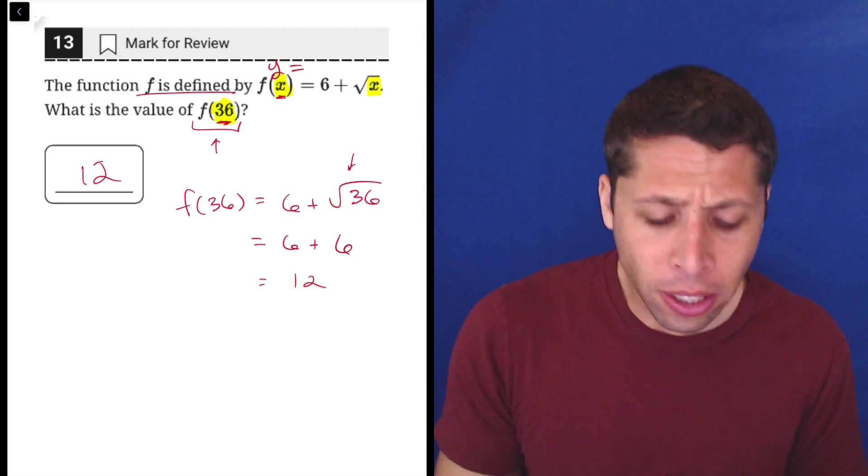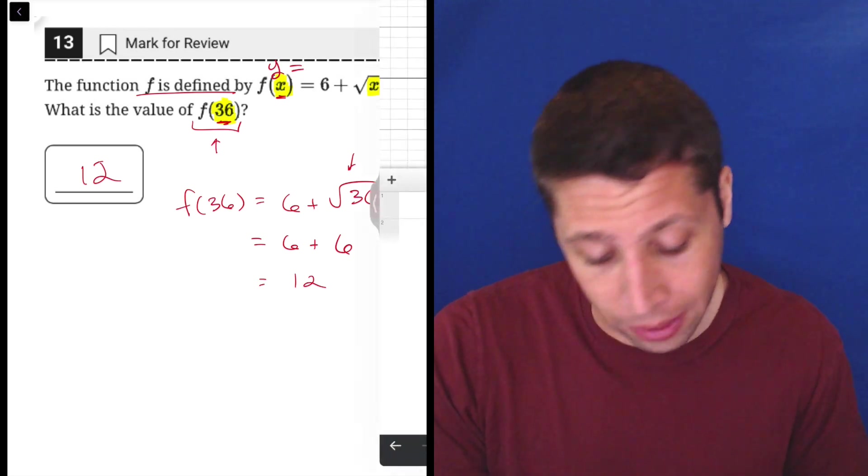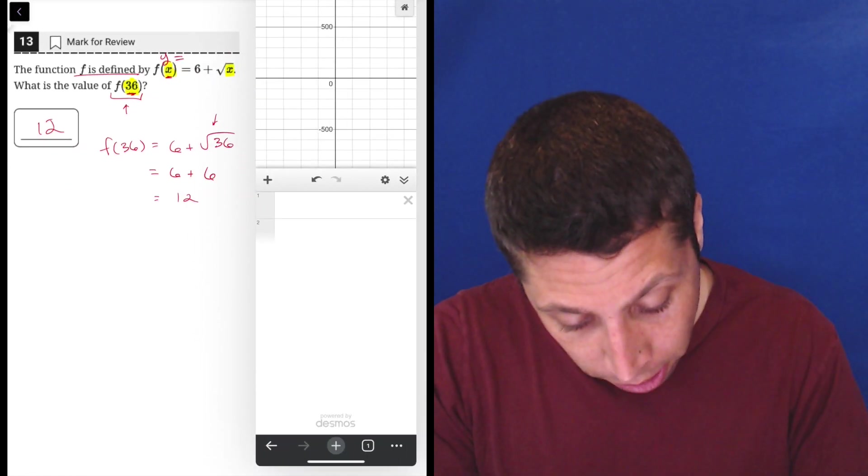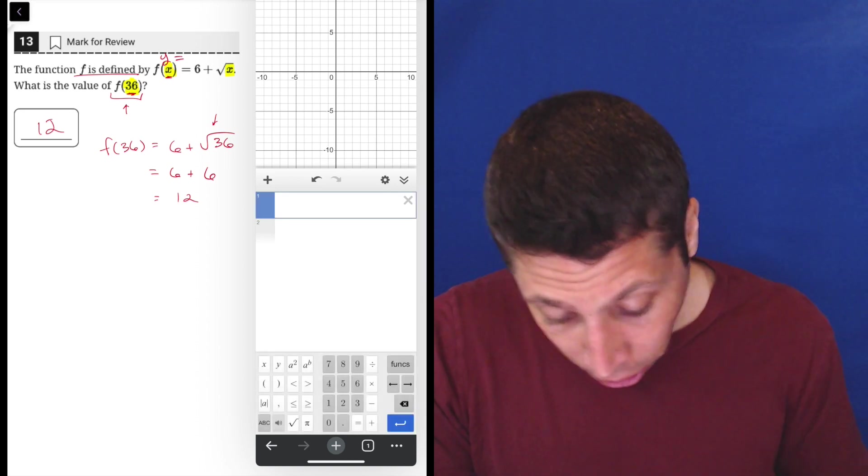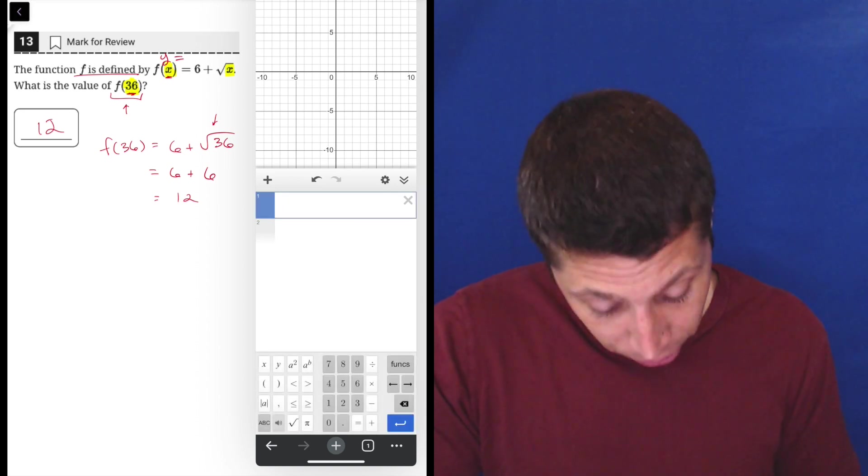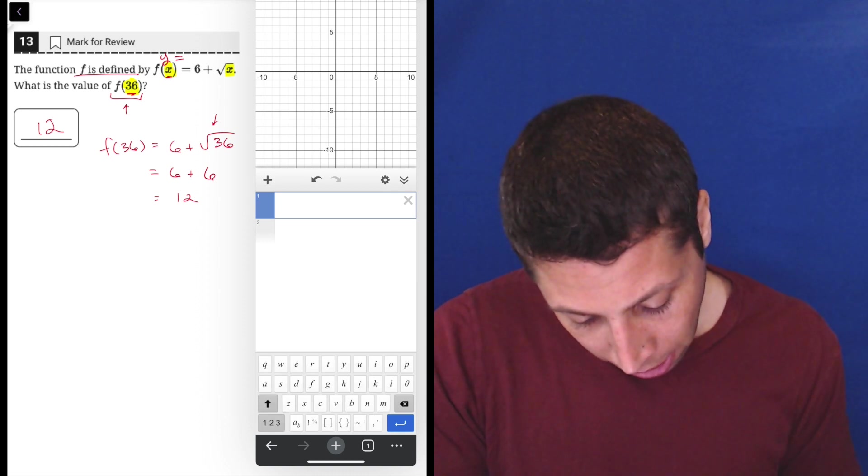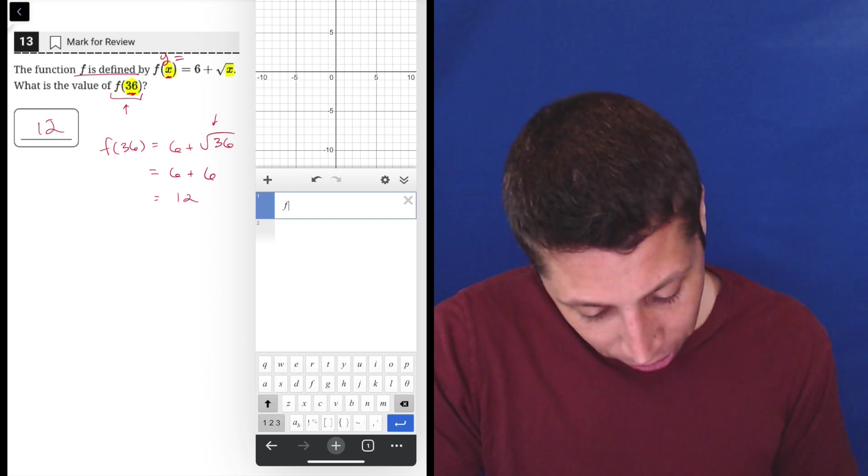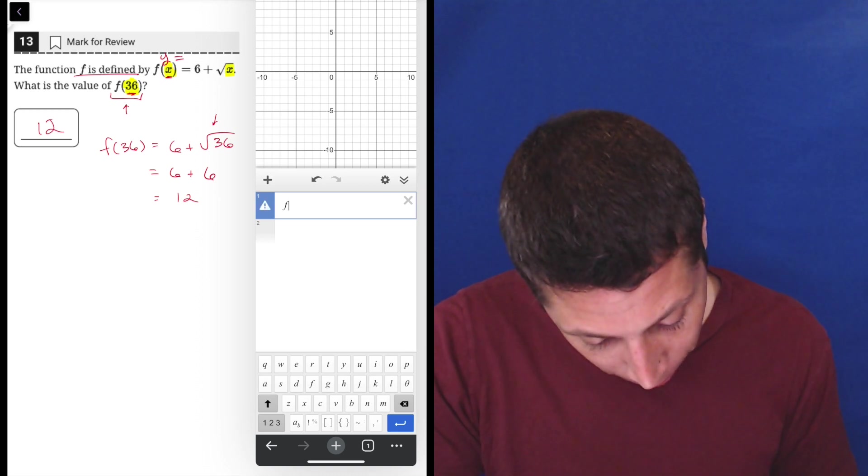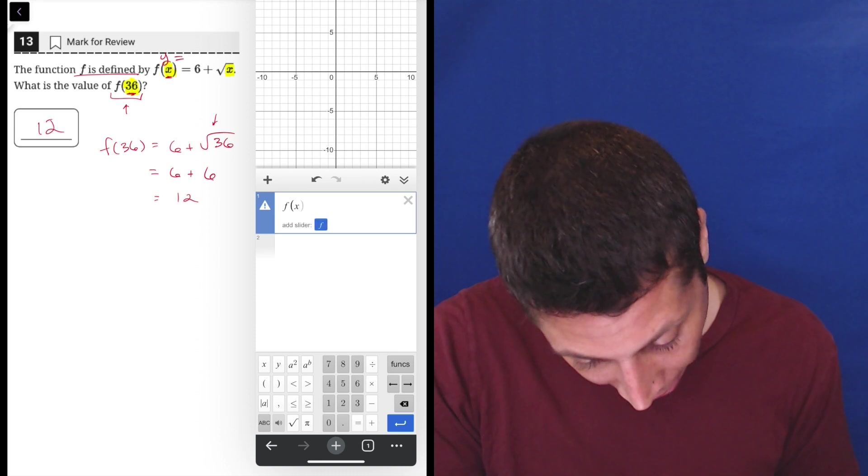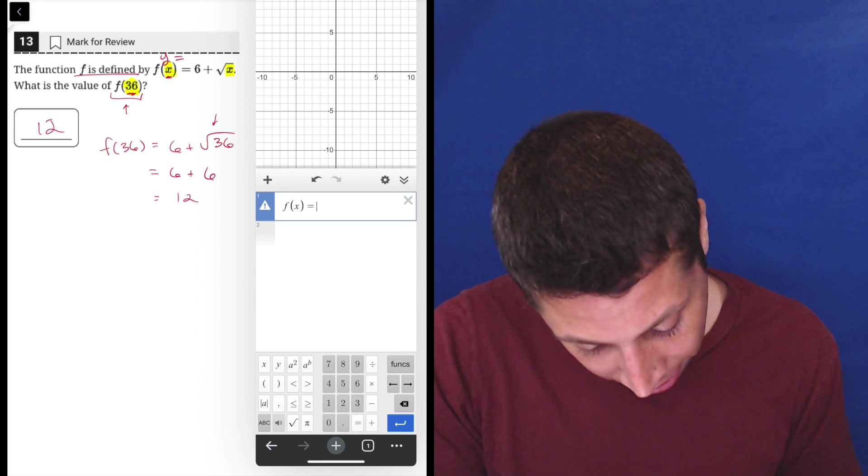Again, the calculator will do this for you. In fact, I think it'll do all of it. Let me just show you since you're here to learn anyway. If I wanted to, I could start off putting in f of x. So if you hit this ABC button on the bottom left here of your calculator, it's going to give you all the letters. So we can do f and then we can put little parentheses. I think I got to go back for that though. See, f of x, close parentheses, equals.